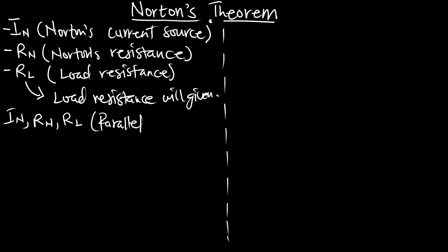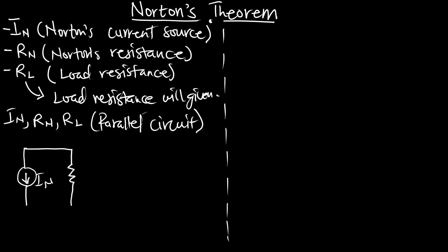Pay attention. In Thevenin's theorem, we have the Thevenin's voltage and the Thevenin's resistance all in series. But for Norton's theorem, we are going to consider the Norton's current, the Norton's resistance, and the load resistance in a parallel circuit — meaning they are all going to be parallel. This is how we are going to have our circuit: IN in parallel to RN, which is also in parallel to RL.